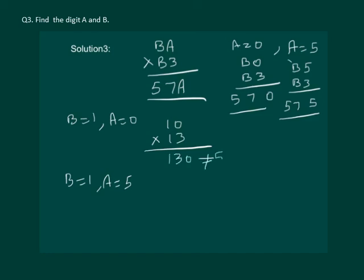You will get 10 times 13. Let us multiply we get 130 which is not equal to 570. Now let us try for B equal to 1 and A equal to 5. We get 15 multiply by 13.